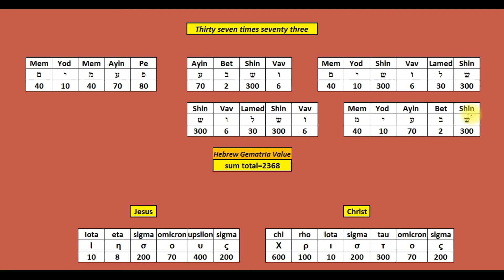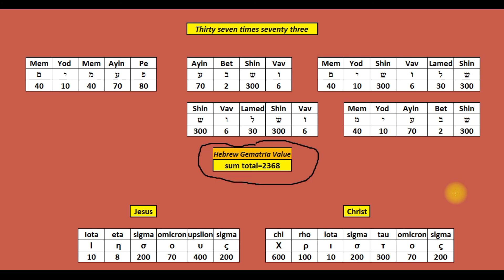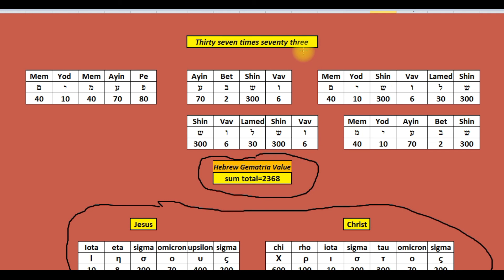Pi, in Hebrew, 37 times 73 written out has a Hebrew gematria sum total value, letter value of 2,368. Jesus Christ, in Greek, has a sum total Greek letter value of 2,368. 37 times 73 equals 2,701. That equals the Hebrew gematria value for Genesis 1, verse 1.